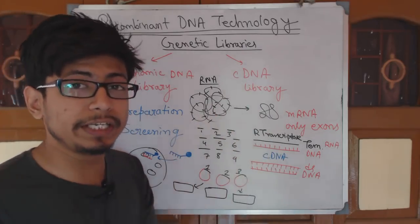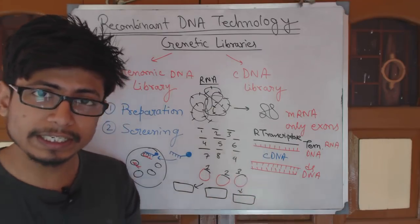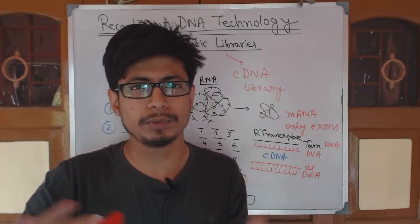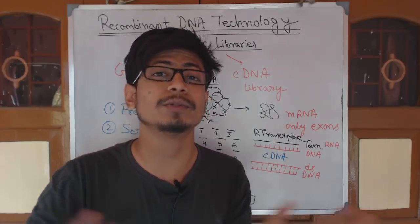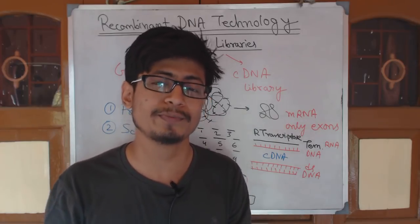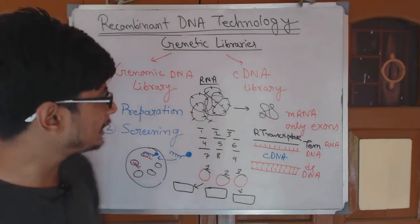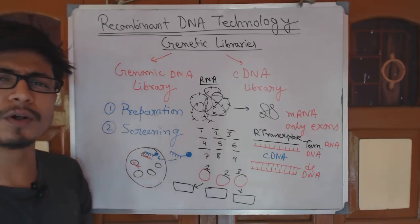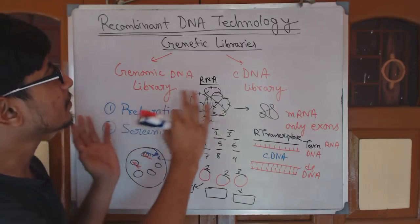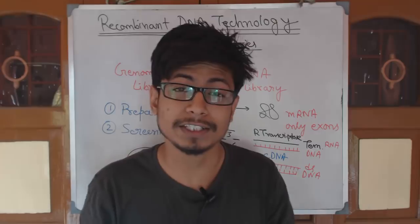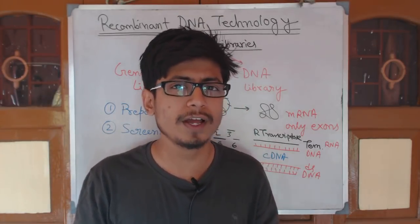Genomic DNA library can be done for both prokaryotes and eukaryotes, while cDNA library is not required for prokaryotes because they don't have introns and exons — they have all coding segments only. So the genomic DNA library can act as a cDNA library for prokaryotes. But for eukaryotes, we need to do cDNA library to exclude the introns and for expression purposes. These are the properties of gene libraries and genetic libraries that we know of.